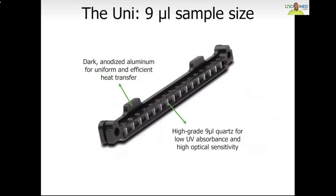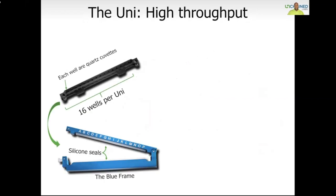One of the key aspects of UNCLE is its sample holder, the Uni. The small-volume cartridge holds 16 nano-liter cuvettes. The Uni is optimized for both heat transfer and optical sensitivity. Its design allows you to run anywhere from one sample at a time up to all 16 cuvettes in each Uni. Any cuvette that isn't used may be used in future runs. Since each cuvette is individually compartmentalized, another benefit of the Uni is that it eliminates the possibility of cross-contamination. Samples are easily loaded using a P10 or P20 micropipette — we often joke that if you can pipette, you can use the UNCLE. Each Uni is capped and covered using silicone seals, so your sample will not evaporate over high temperature ranges or during overnight isothermal runs, and there is no possibility of samples leaking.